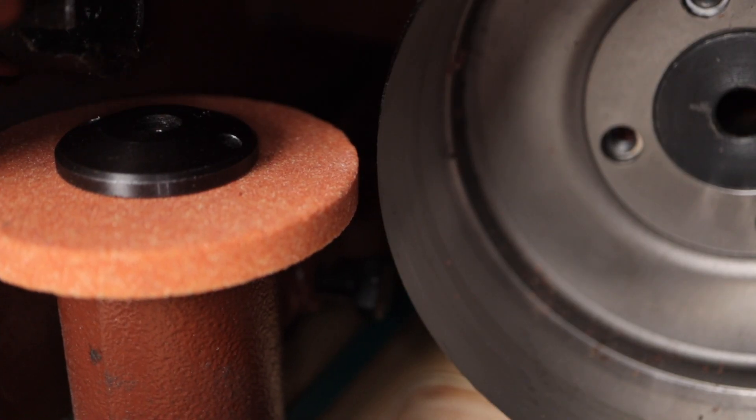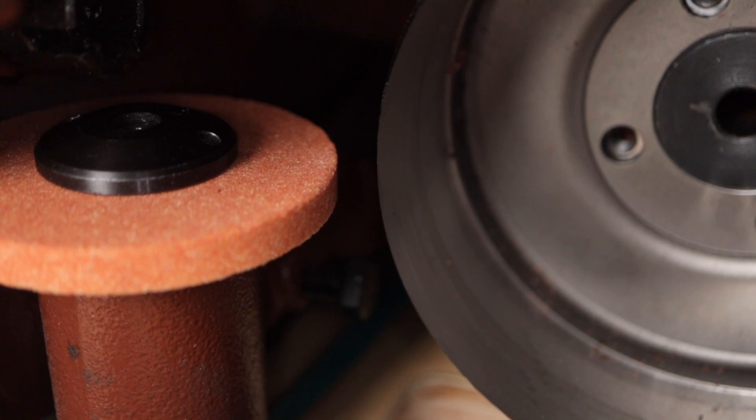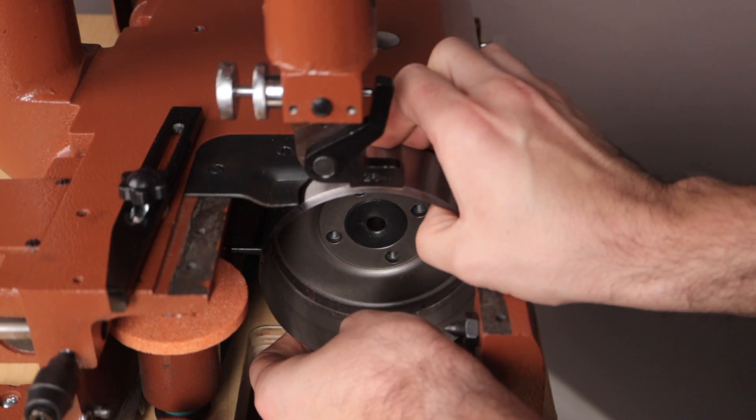Move the sharpening stone all the way back so you have room to remove the blade. Now gently wiggle and unseat the blade until it comes off.